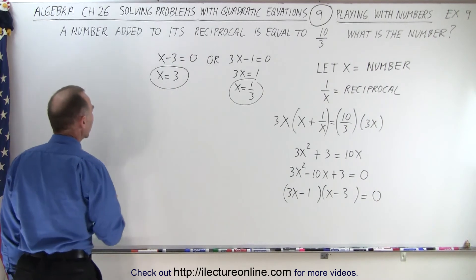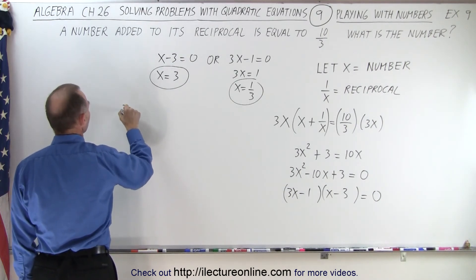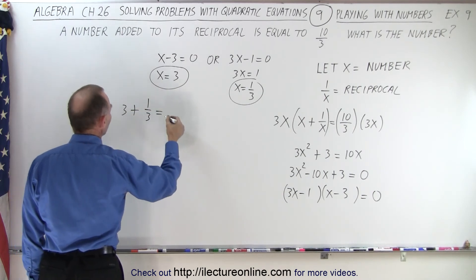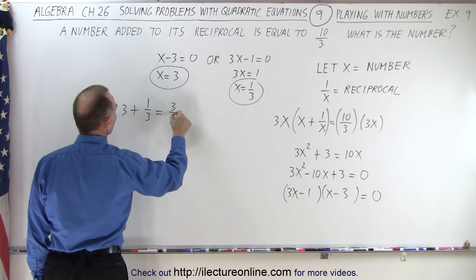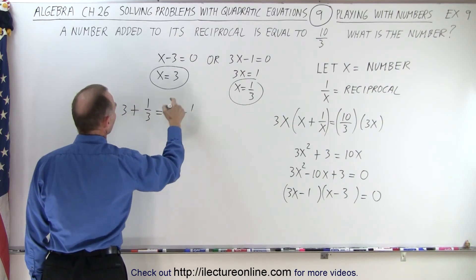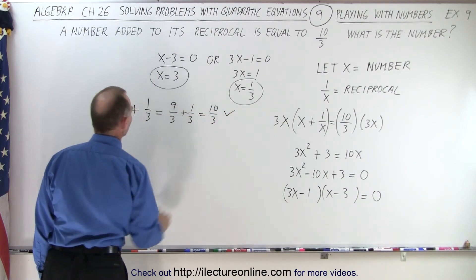Let's see if that works out. So first of all, if x equals 3, then the reciprocal would be 1 third. And of course, 3 plus 1 third, that would be equal to 3 thirds plus 1 third. Oh, not 3 thirds, but 9 thirds. 9 thirds plus 1 third, which is 10 thirds. And that checks.